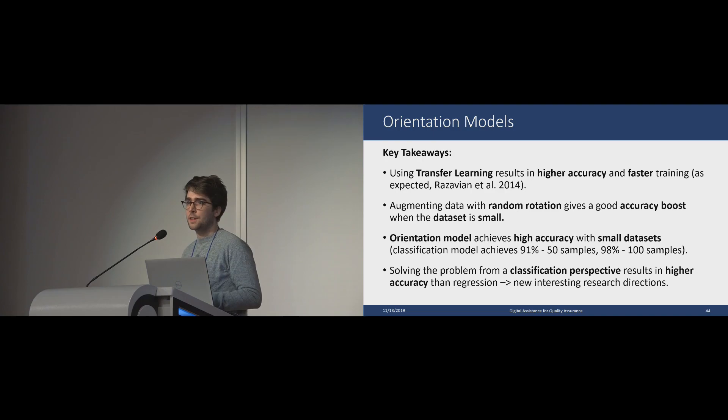The key takeaways from our technical evaluation were that using transfer learning always resulted in higher accuracy and faster training, an expected result according to related literature. Augmenting our dataset with random rotation gave a very good accuracy boost, especially when the dataset was small. This allowed us to train our models with very small dataset sizes, such as 50 samples, and still achieve very high accuracies. For example, with 50 samples, we can achieve 91% accuracy, and with 100, we were able to achieve 98%. Solving the problem from a classification perspective always resulted in higher accuracy than solving it from a regression perspective, which opens very interesting new research directions.